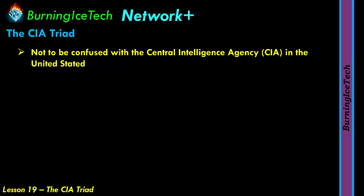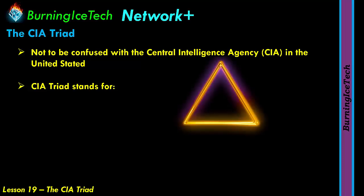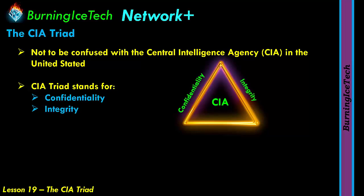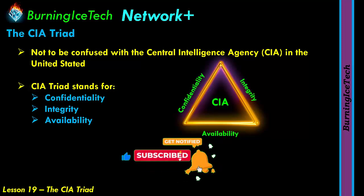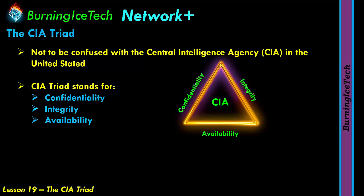So the CIA Triad in IT — I'm going to give you a triangle here on the right-hand side to symbolize this triad. CIA stands for: C is Confidentiality, I is Integrity — making sure something is original and authentic — and A is Availability, making sure whatever resource this is is always available to the user.